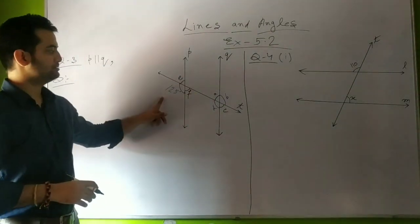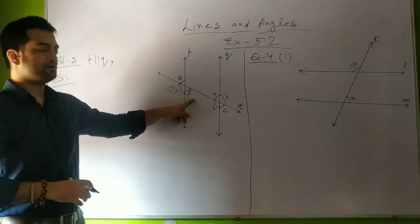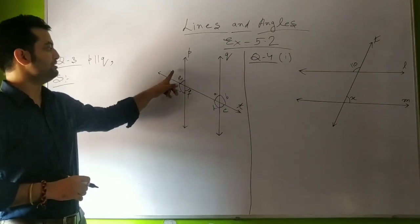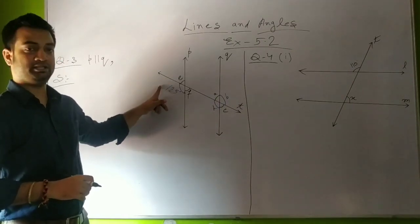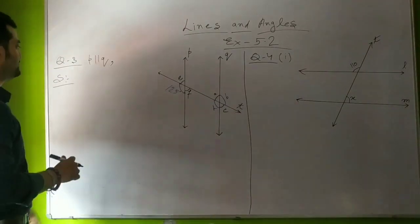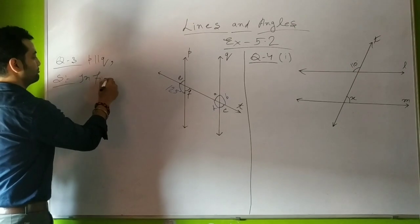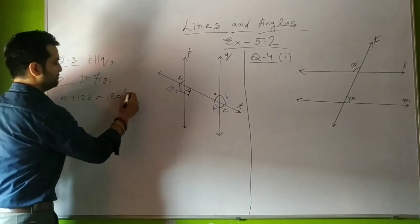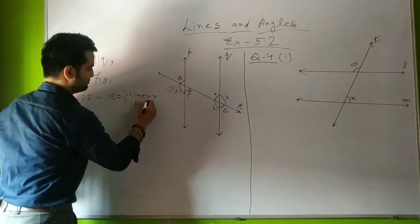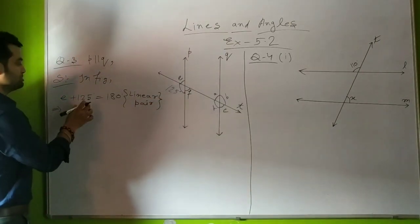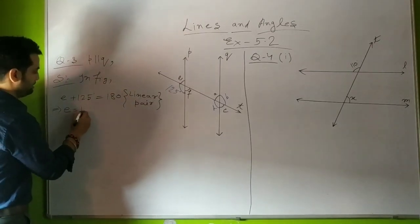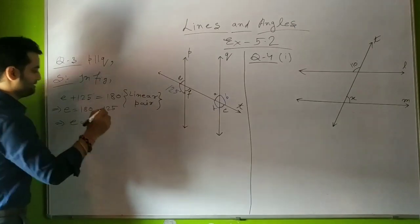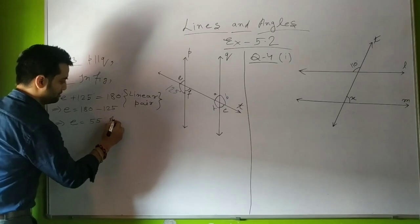Looking at this part of the figure, E and F are vertically opposite angles, and 125 degrees is a linear pair with both angle E and angle F. We know that the sum of a linear pair is 180 degrees, so we write: E + 125° = 180° because these angles are a linear pair. Transposing 125° to the RHS, E = 180° − 125°, so E = 55 degrees.